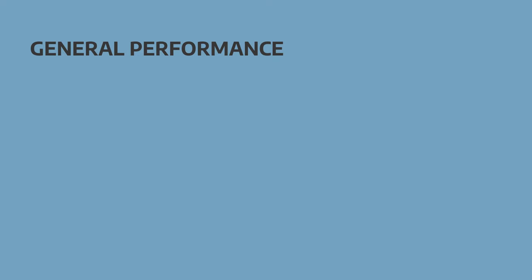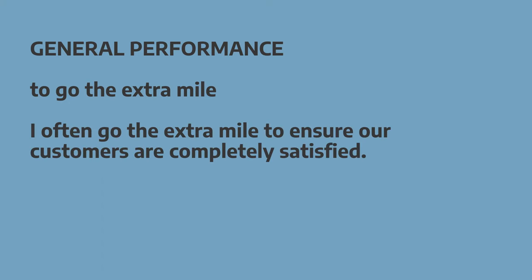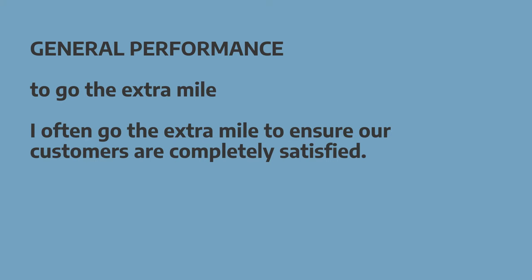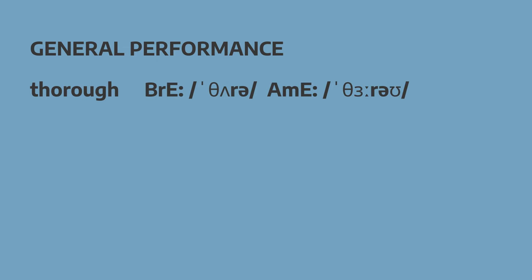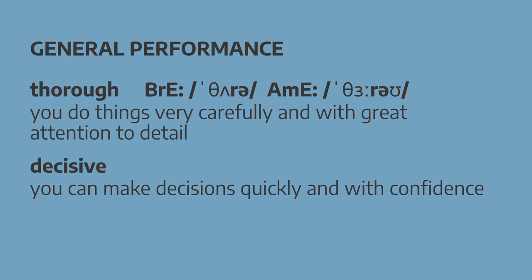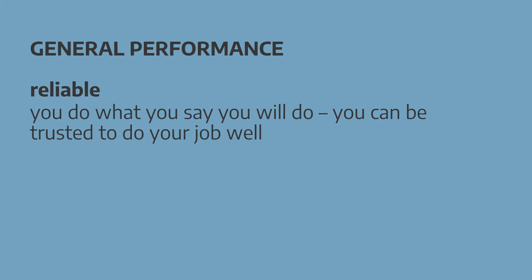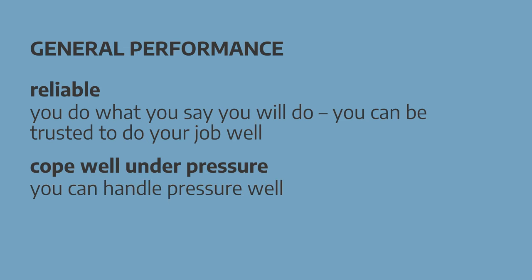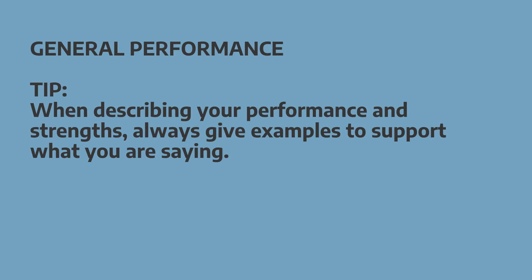A similar phrase is to go the extra mile — for example, 'I often go the extra mile to ensure our customers are completely satisfied.' Here are some other useful words for performance and strengths. Thorough (British English) or thorough (American English) — it means you do things very carefully with great attention to detail. Decisive means you can make decisions quickly and with confidence. Reliable means you do what you say you will do and can be trusted to do your job well. Cope well under pressure means you can handle pressure well. And an important tip: always give examples to support what you're saying.